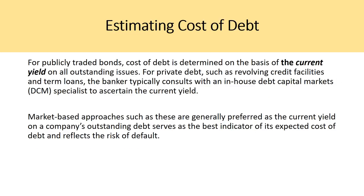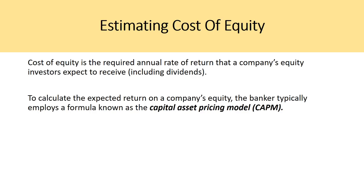For estimating cost of debt: for publicly traded bonds, cost of debt is determined based on the current yield on all outstanding issues. For private debt such as revolving credit facilities and term loans, the banker typically consults with an in-house debt capital markets specialist to ascertain the current yield. Market-based approaches are generally preferred as the current yield on a company's outstanding debt serves as the best indicator of its expected cost of debt and reflects the risk of default. For cost of equity, this is where important assumptions are made — cost of equity is the required annual rate of return that equity investors expect to receive including dividends, and is typically calculated using the capital asset pricing model (CAPM).